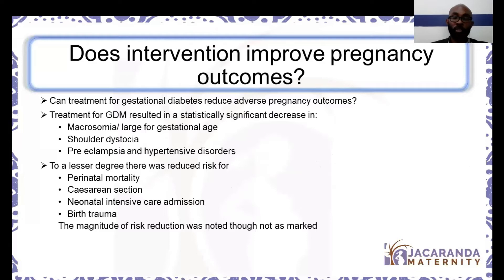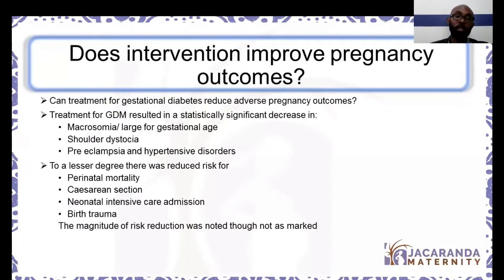Does treatment of GDM improve pregnancy outcomes? The answer is yes. Treatment results in a statistically significant decrease in a number of complications. The most common reduction when you treat is macrosomia, or large babies — large babies tend to have more problems during childbirth and after delivery. When we treat hyperglycemia or gestational diabetes, we reduce that risk. We also reduce shoulder dystocia, which is a complication during delivery where the fetus gets stuck and can lead to nerve damage or fetal death.